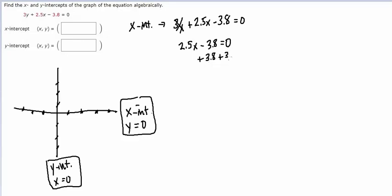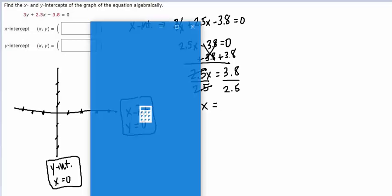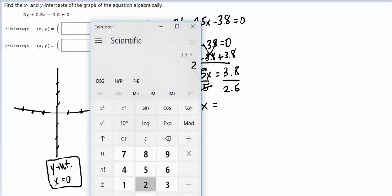And we'll do our algebra here, add 3.8 to both sides. We get 2.5x equals 3.8. Divide both sides by 2.5, and we get that x equals 1.52, since 3.8 divided by 2.5 is 1.52.